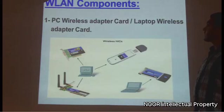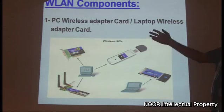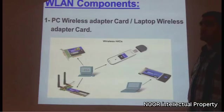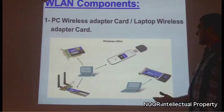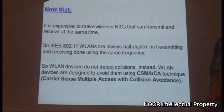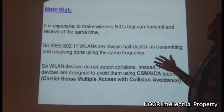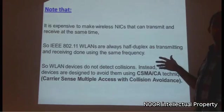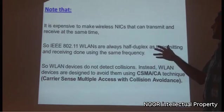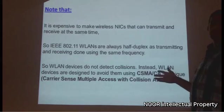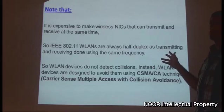We will start with WLAN components. The first components are the PC wireless adapter card and the laptop wireless adapter card. The laptop wireless adapter card is now obsolete — it is hidden and embedded in the laptop. To make wireless NICs transmit and receive at the same time would be expensive, so IEEE 802.11 wireless LANs are always half-duplex, as transmitting and receiving are done using the same frequency.